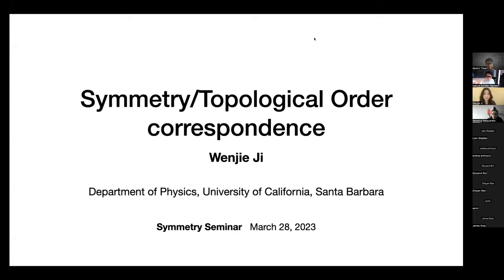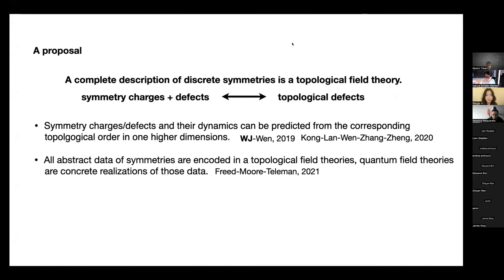Hello everyone. Good morning from California. Today I will talk about this topic I call the symmetry topological order correspondence. We will talk about a proposal put forward in recent years by a couple of groups, which proposes that a complete description of discrete symmetries is going to be a topological field theory. Traditionally when we describe symmetries, we emphasize symmetry charges, but this proposal says we should also emphasize the role played by symmetry defects. A complete description of both will be a topological field theory, and those symmetry charges and symmetry defects will appear in it as topological defects.